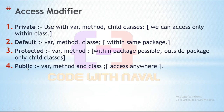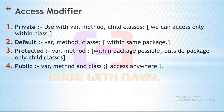Fourth, we have the public access modifier. We can use public with variables, methods, classes, and constructors. If you define any variable or method as public, then we can use those members anywhere inside your project — within a class, outside a class, within a package, outside a package, within other packages. You can use them anywhere. Using these four access modifiers, we can set accessibility for classes, variables, and methods. We can control everything.